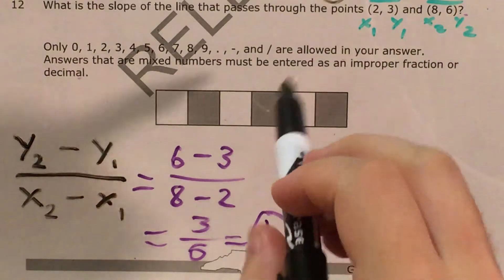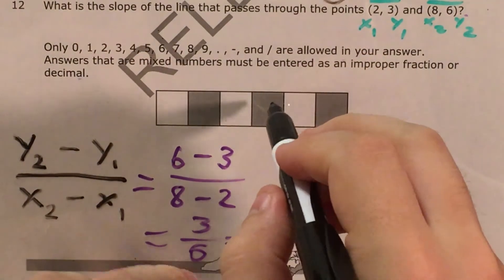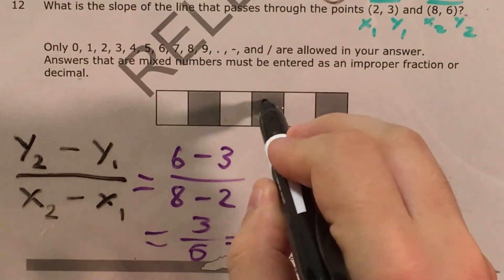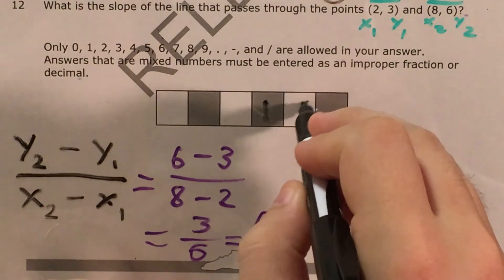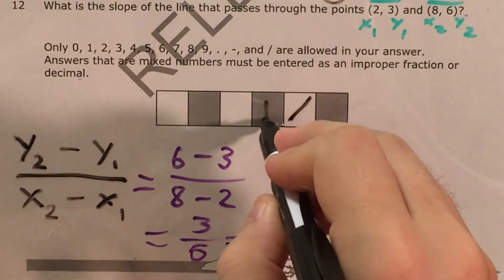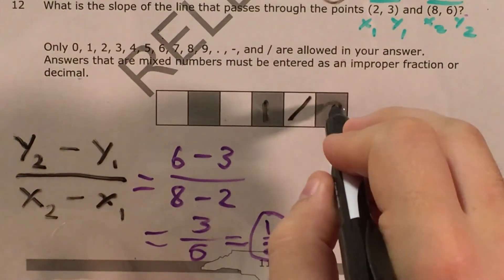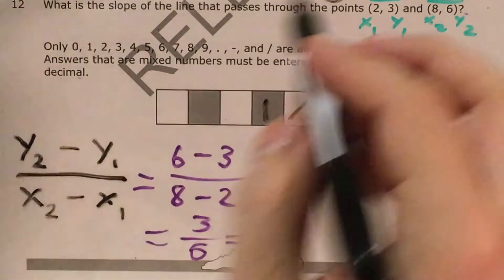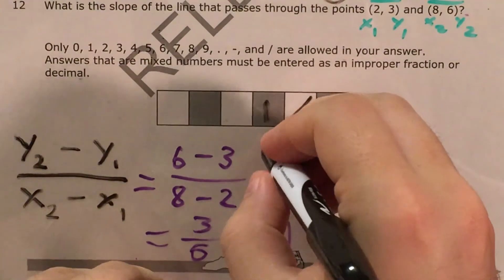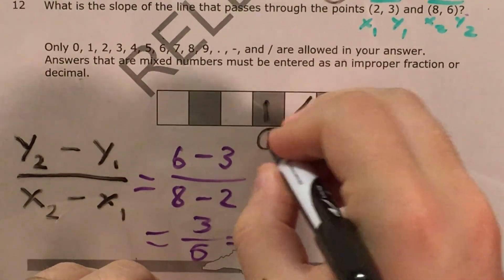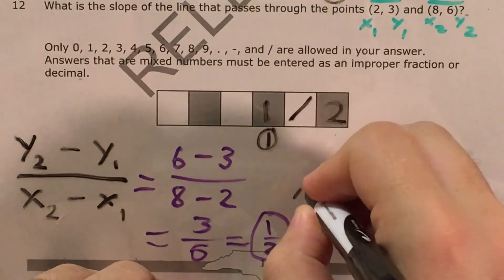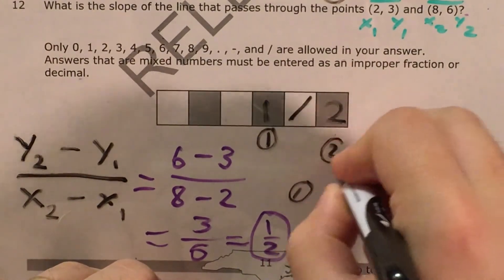And now I need to actually fill this in. So I'm going to come up to my gridded response boxes. This is 1 gets its own box. A right slash, meaning a fraction, gets its own box. And then my denominator 2 gets its own box, and I need to bubble in under each space, my 1, my slash, and my 2.